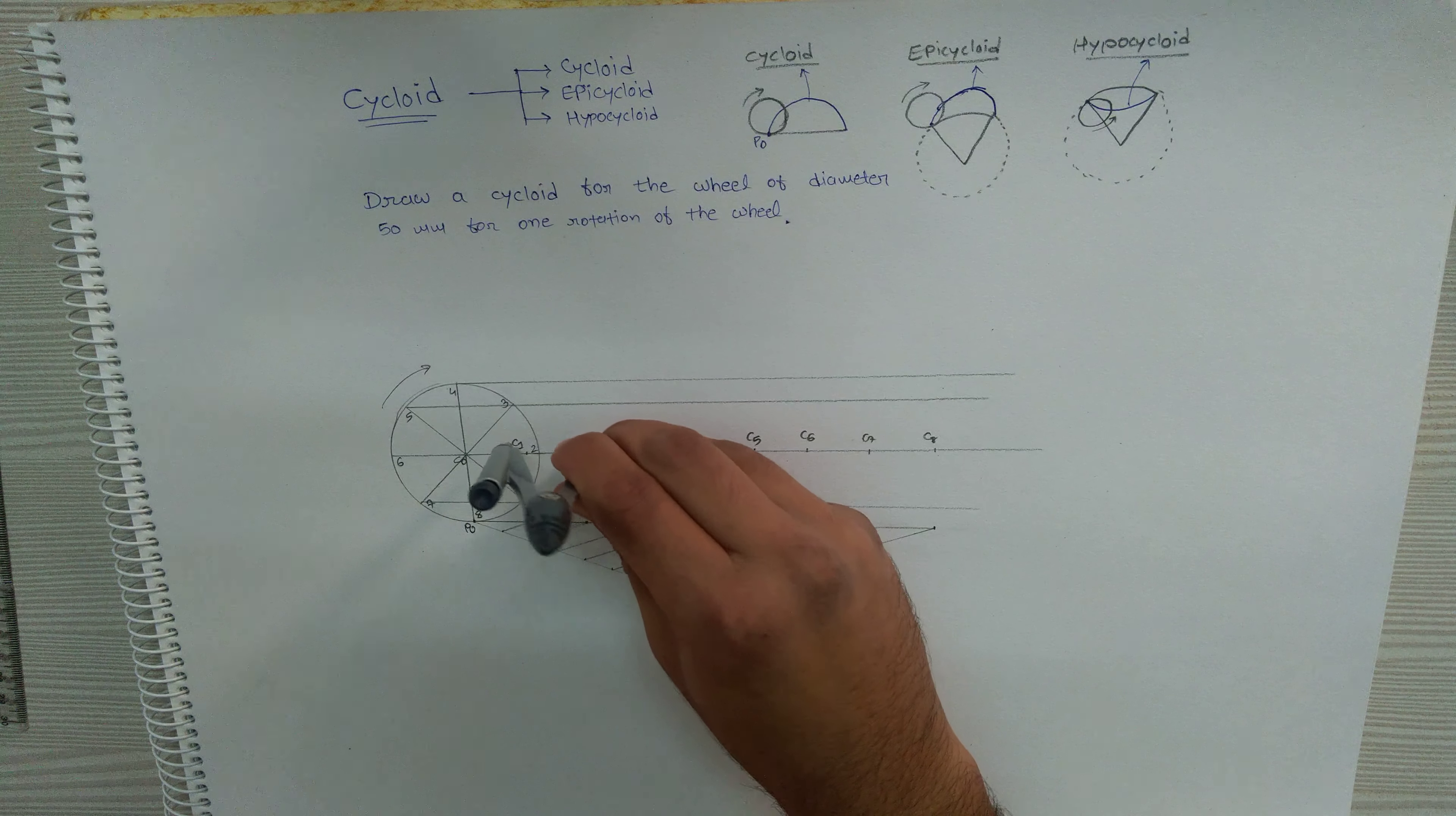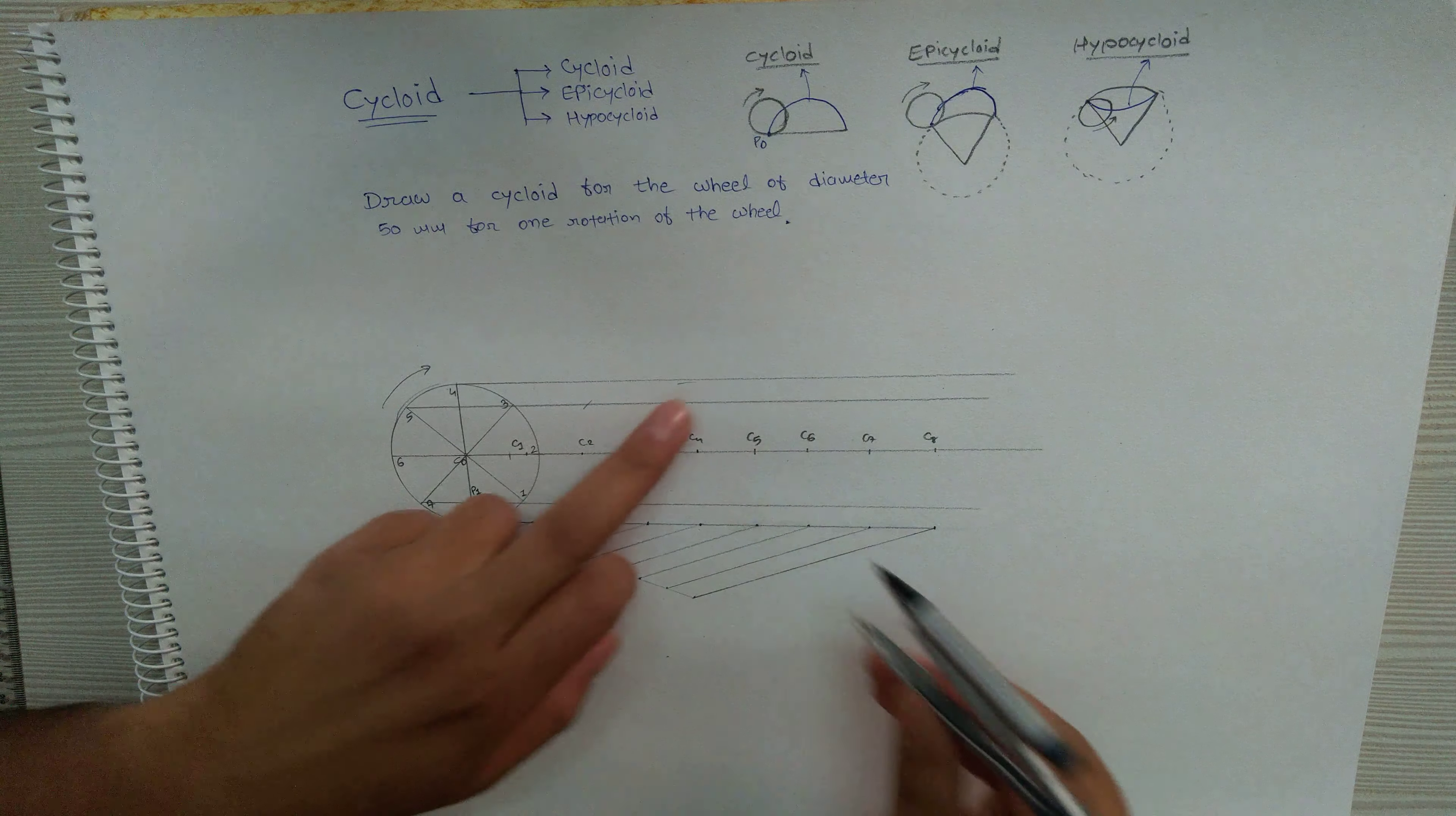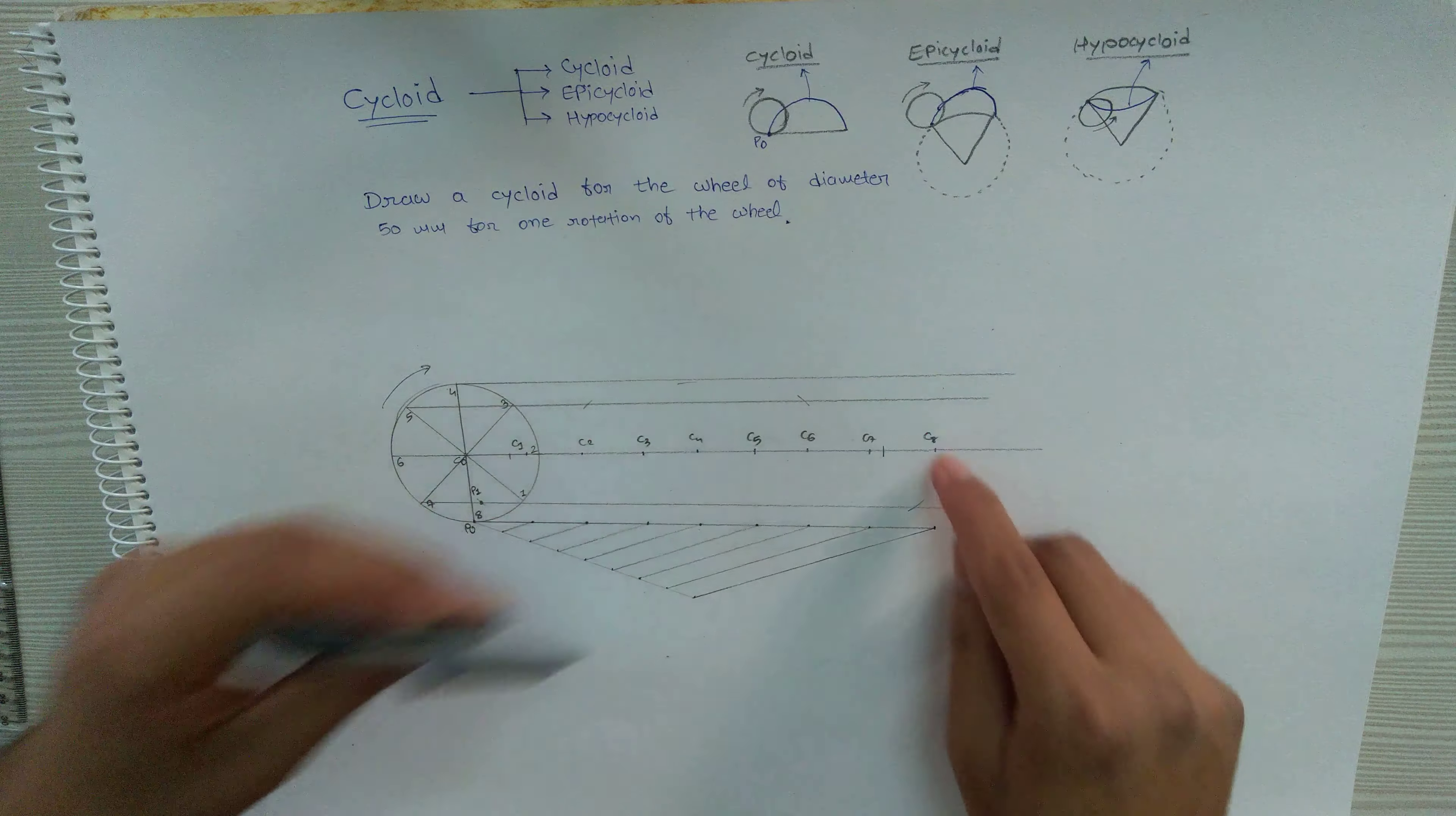Then with center c2, now don't change the radius - it is the same radius on the line of 2. With center c3, line of 3. With 4, it will be exactly tangential to this line. And 5 on the line of 5. Three and five will share the same line. Six and seven.